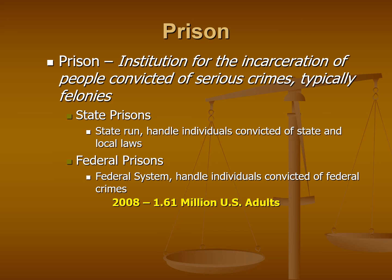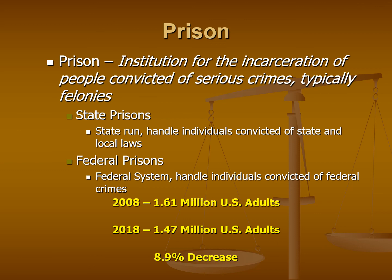Looking at how the prison population has changed over the last 10-12 years: in 2008, there were 1.6 million U.S. adults incarcerated in state or federal prisons. By 2018, we see another area of decline — down to about 1.47 million U.S. adults, which is almost a 9% decrease. So far we've seen decreases in probation, jail populations, and prison populations — clearly showing a different manner in which we are punishing individuals. This may tie to a reduction in the crime rate or a change in philosophies, going back to that panacea pendulum.